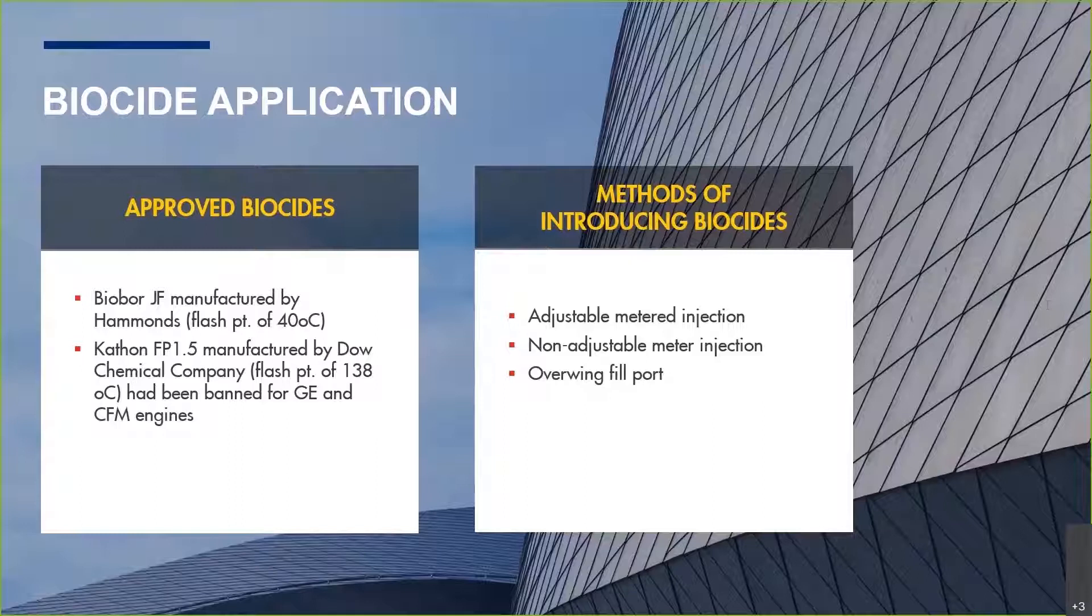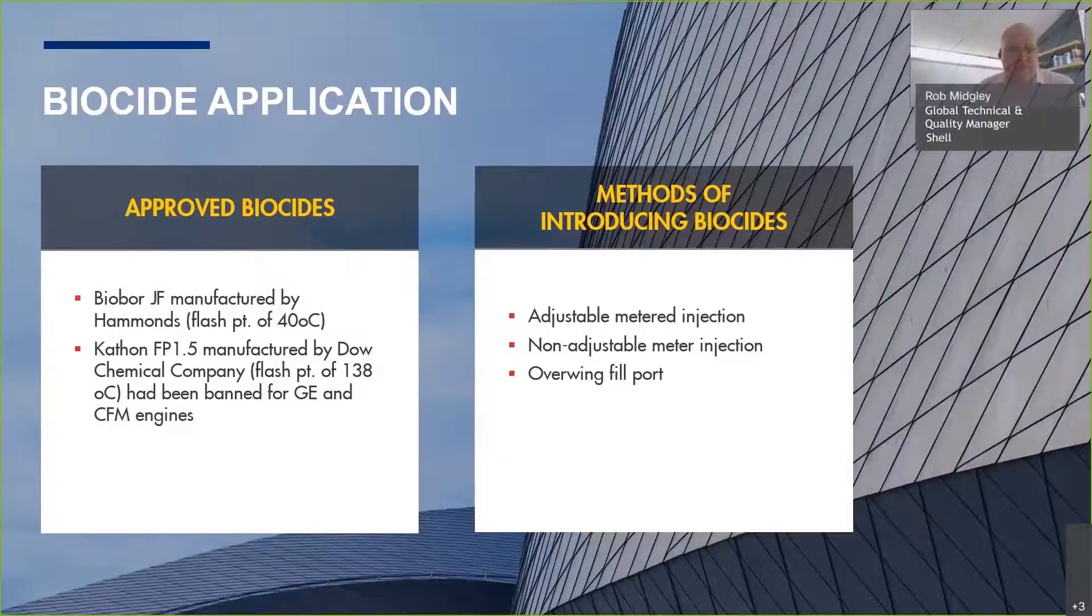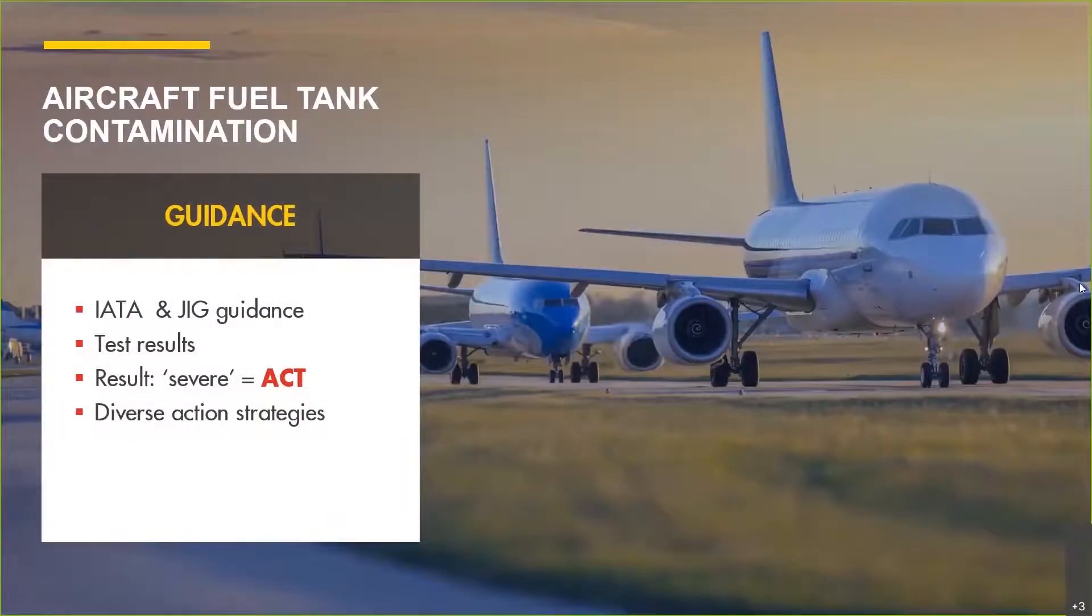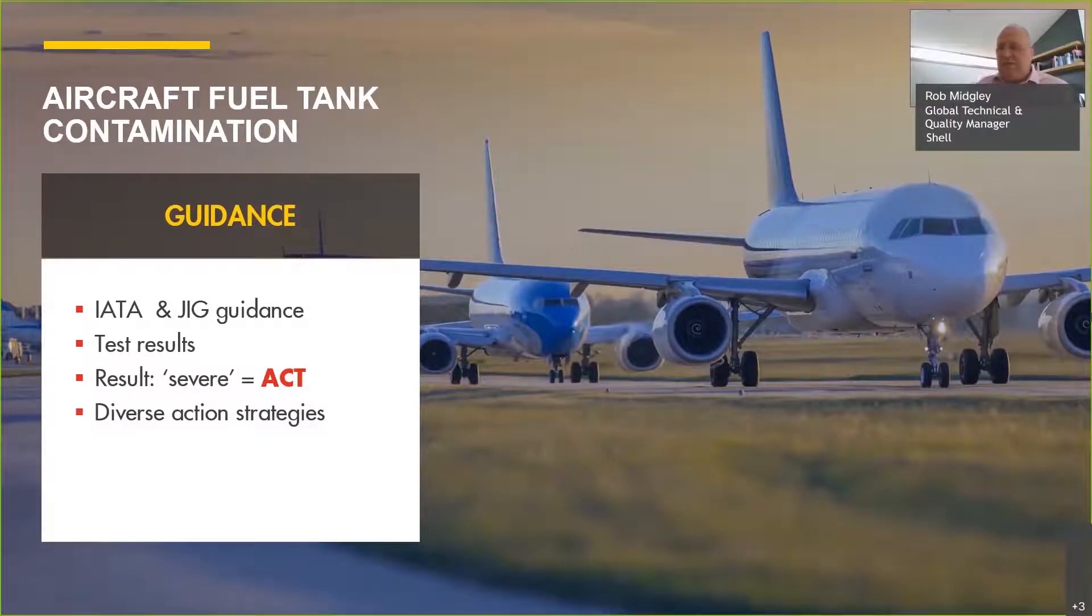What happens if you get an indication that you have microbial contamination? It's common to use in the airline industry one of the two approved biocides: Biobor JF produced by Hammonds and Kthon FP1.5. When we get the results from test kits, we can get different levels of judgment. When we get to that severe or action level, it's telling you you need to act. That action can be either biocide injection, which is the most common reaction, or if left untreated, it might mean you're needing to defuel the aircraft and do some tank entry and cleaning.